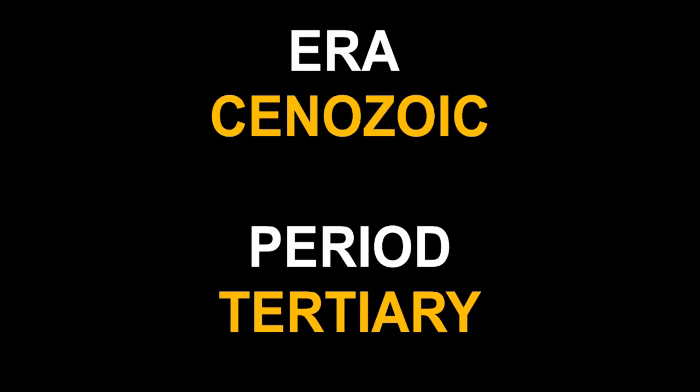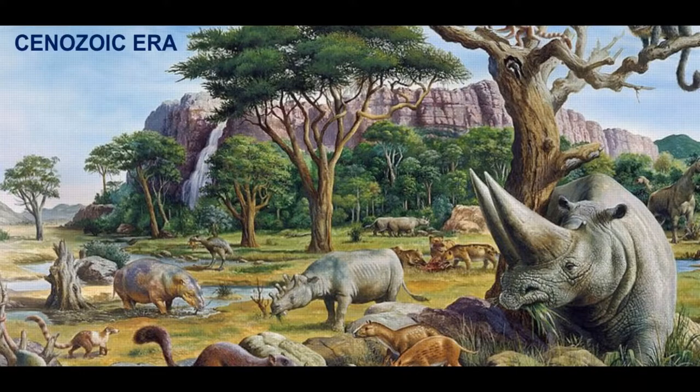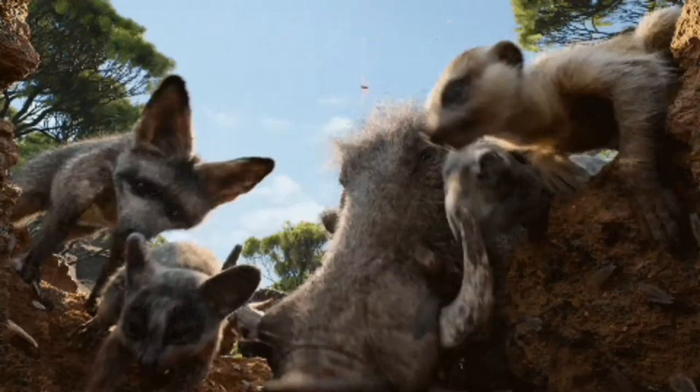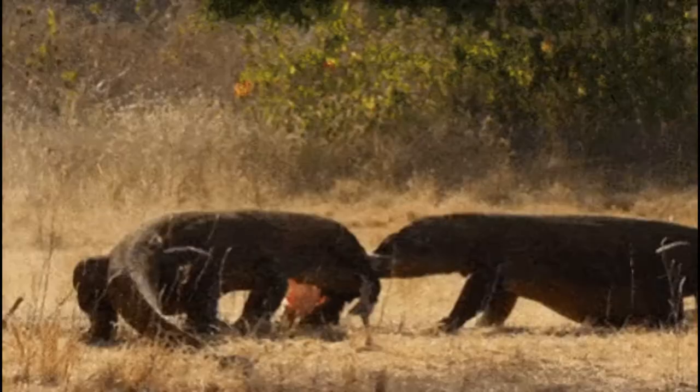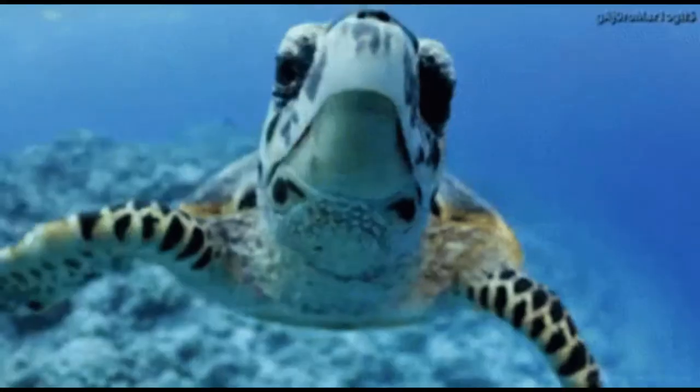Hello children! We're making good progress on our study of the timeline of the development of life. Today we'll be moving over to the Cenozoic Era, which began 65 million years ago. Cenozoic means recent life, showing that modern plants and animals were found during that period. So 75% of the animals and plants from that time still exist today.